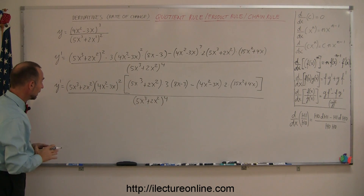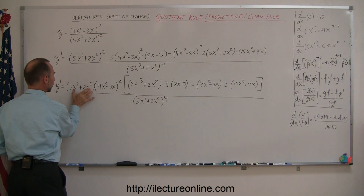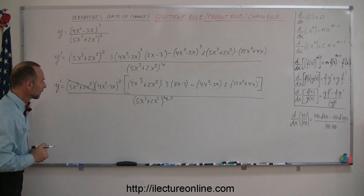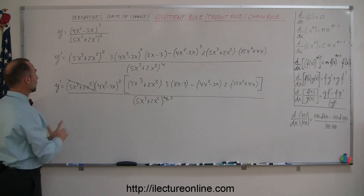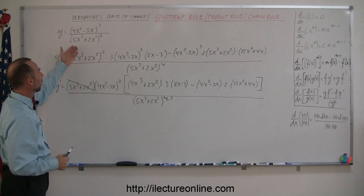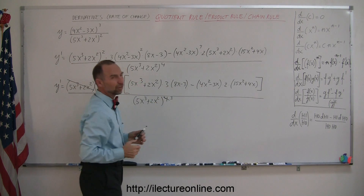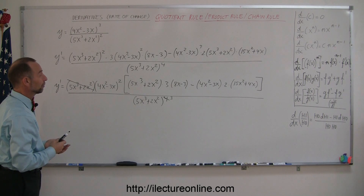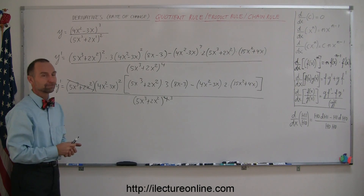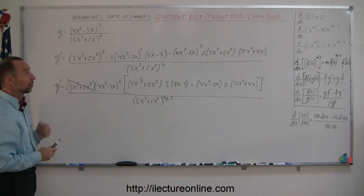Now let's take a look. Do we notice something in common? We have a 5x cubed plus 2x squared to the fourth power in the denominator and a 5x cubed plus 2x squared to the first power in the numerator, so one of those factors cancels, reducing the denominator to the third power. That is our solution — the derivative of this quotient. If you want, you could multiply all this out and collect common terms; that's just an exercise in algebra. If your teacher wants you to do that, you need to, otherwise you just leave it like that as the final solution. In the next example, we'll use all three rules all at once.